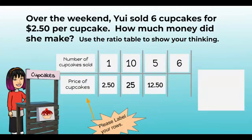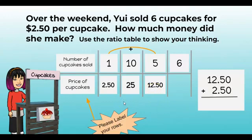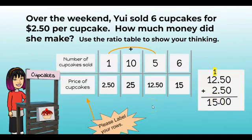Now we want to get to six, so we have one more step. We add our five and our one together: twelve fifty plus two fifty. Line up your decimals — fifty cents plus fifty cents is a dollar, carry the one. One plus two plus two gives us five, and then we have our ten, for fifteen. Don't forget to bring down your decimal. Great job!